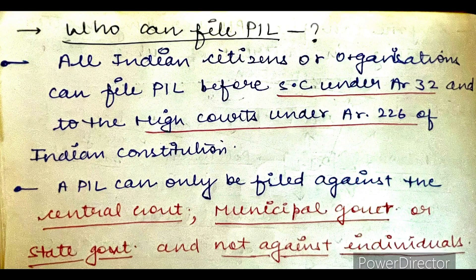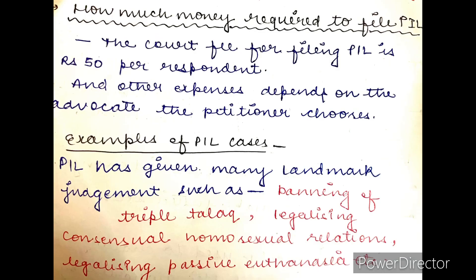Who can file a PIL? सारे citizens of India या organizations PIL file कर सकते हैं — to the Supreme Court under Article 32, and to the High Courts under Article 226 of the Indian Constitution। PIL can be filed against the central government, municipal government, और state government, but not against an individual। PIL file करने के लिए court fee just 50 rupees per respondent है, लेकिन other expenses इस पर depend करते हैं कि petitioner कौन सा advocate choose करता है।